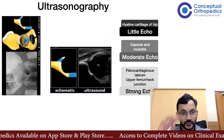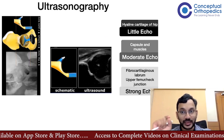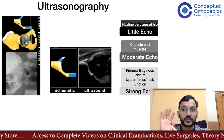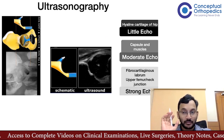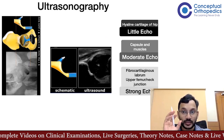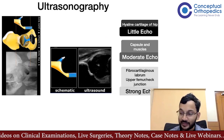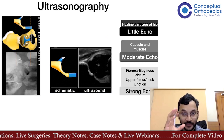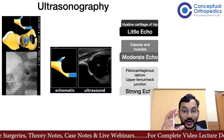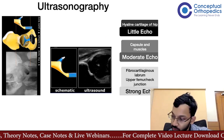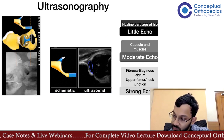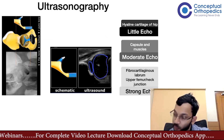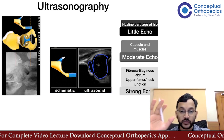On the ultrasound we see three different types of echoes. First, there are structures with little or no echo — this is the hyaline cartilage of the hip. This no-echo region is made up of the femoral head epiphysis as well as the hyaline cartilage of the acetabulum. These regions appear without echo because they are hyaline cartilage of the hip joint.